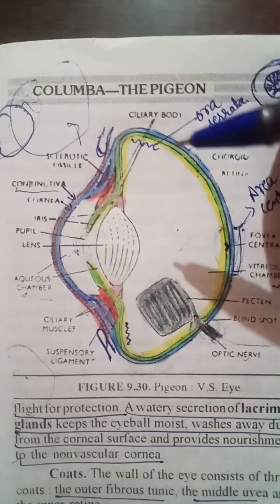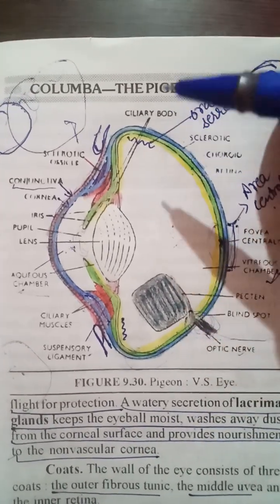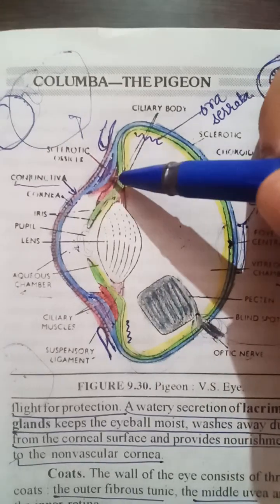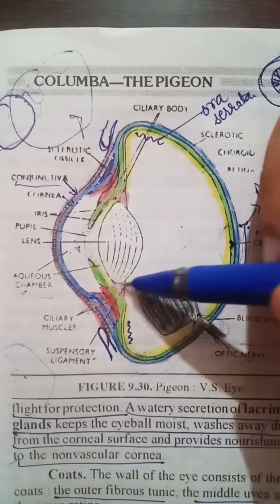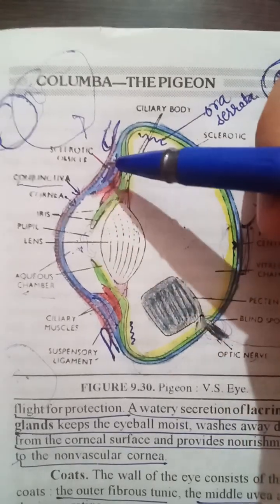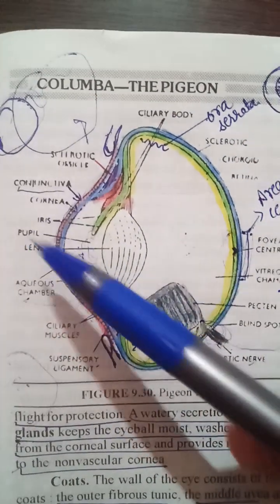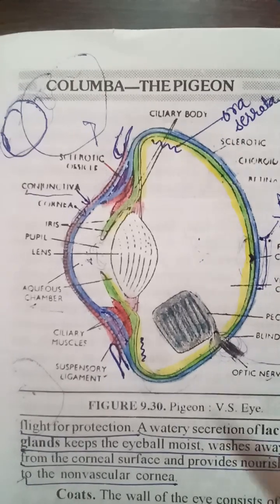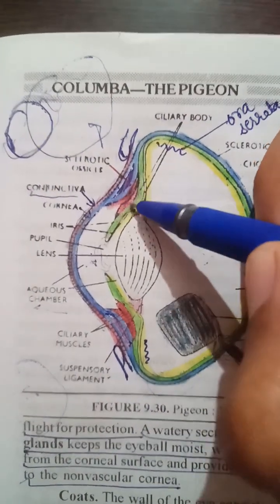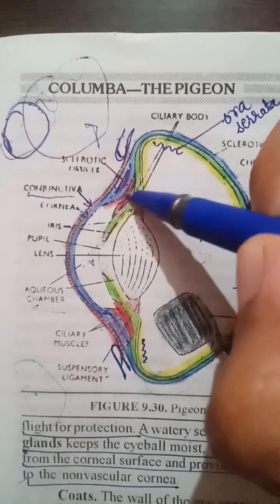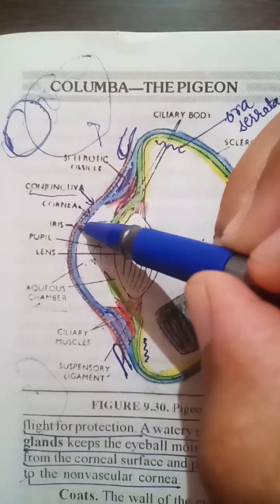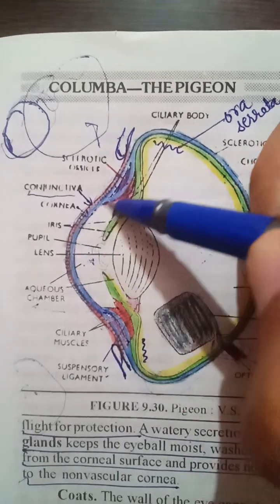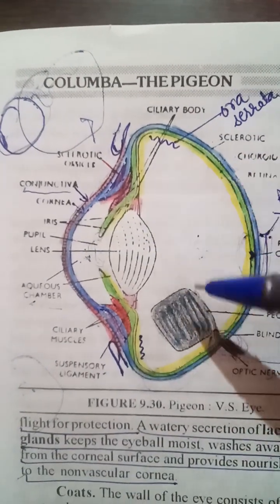Now we talk about the accommodation muscles. There are ciliary muscles shown here in red. They accommodate the eye by changing the curvature of the lens, cornea, and conjunctiva. There are two sets of muscles: one is Crampton's muscle, which is the outer one, and the other is Brücke's muscle. When Crampton's muscle contracts, it pulls the cornea and conjunctiva inward, changing their curvature and helping in accommodation of the eye.